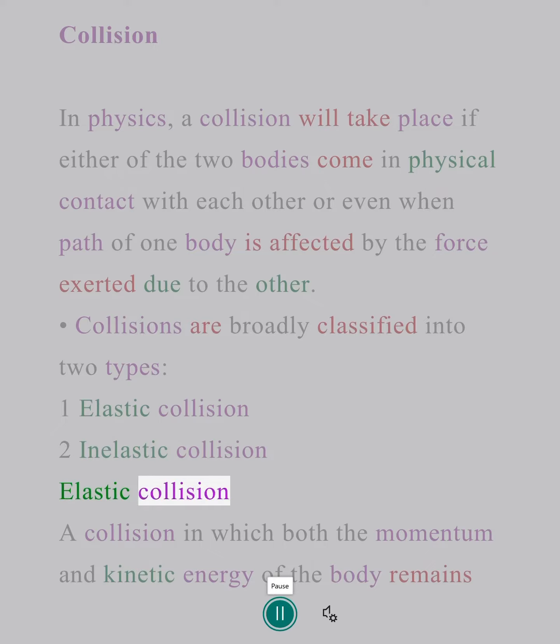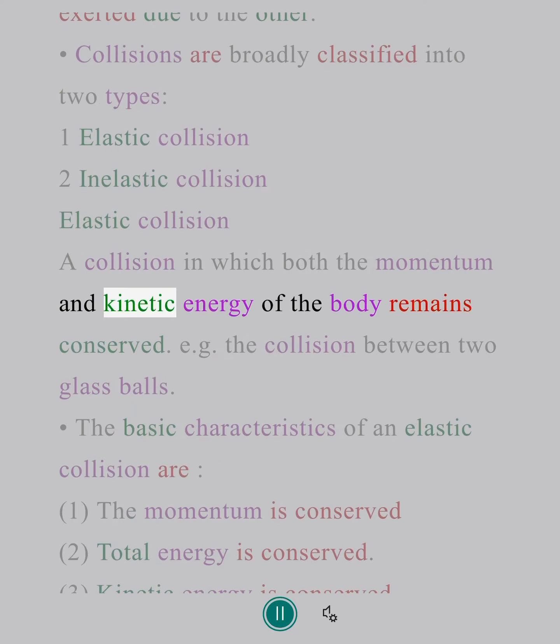Elastic collision: A collision in which both the momentum and kinetic energy of the body remains conserved. For example, the collision between two glass balls.